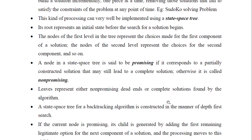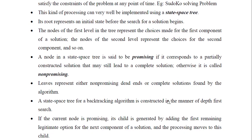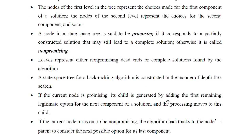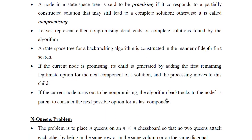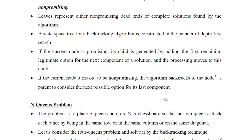Now we will see some example problems that can be solved by means of this backtracking technique. One famous example is the N-queens problem. This problem tries to place N queens on an N-by-N chessboard so that no two queens attack each other by being in the same row, same column, or same diagonal.